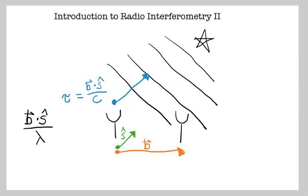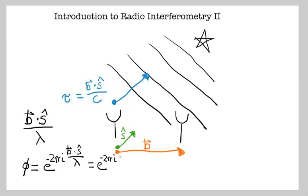If we have the number of wavelengths from antenna A to antenna B, we can describe the phase phi as e to the minus 2 pi i, B dotted into the source direction, divided by the wavelength. This is also equivalent to e to the 2 pi i times the geometric delay between the two antennas times the observing frequency — these are completely equivalent expressions.